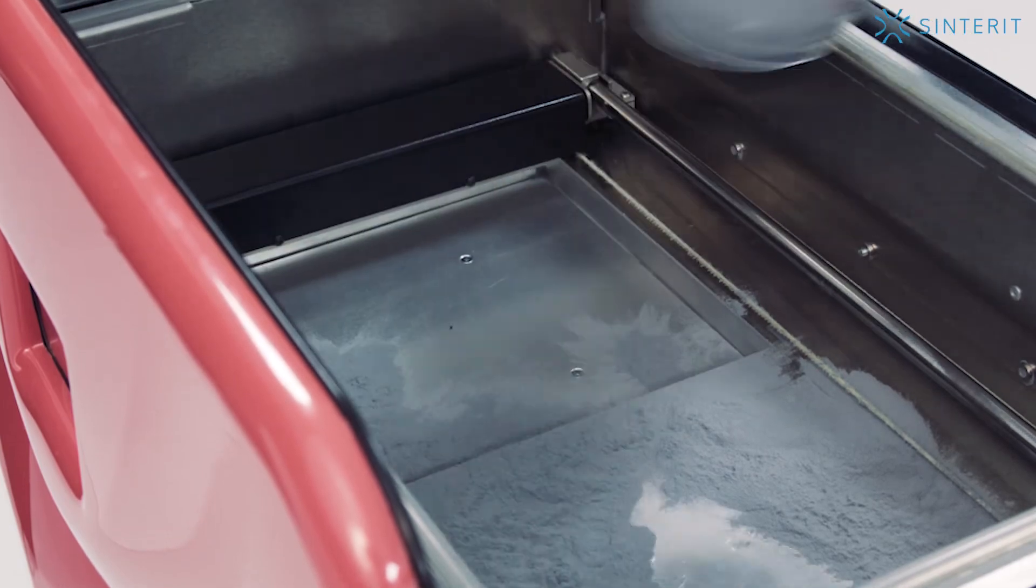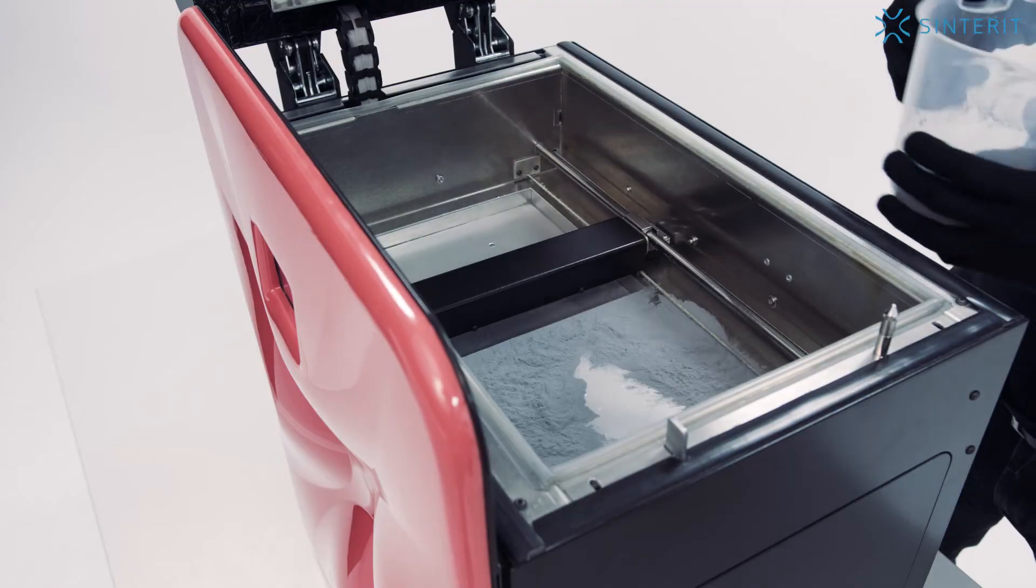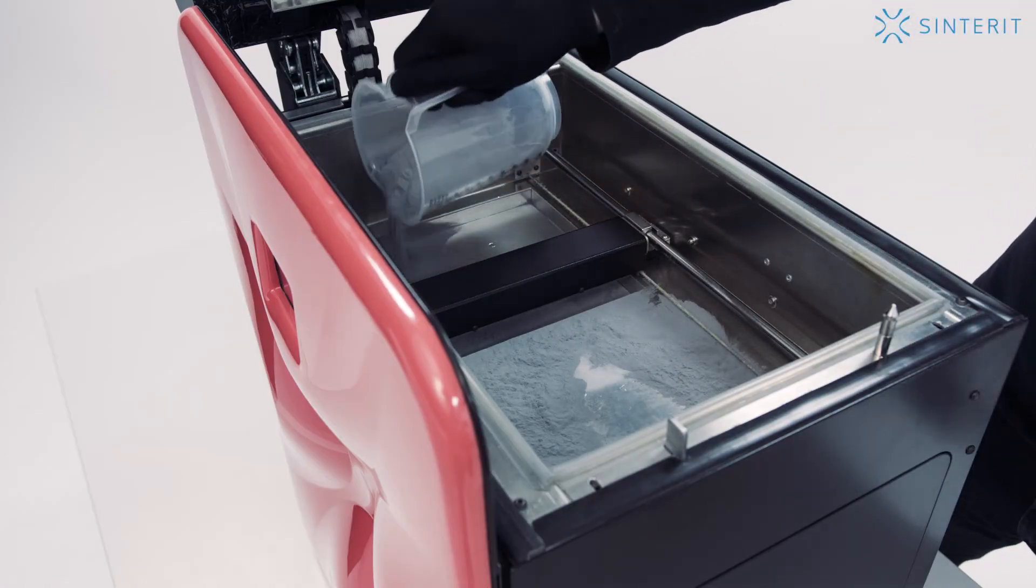If the recoater is in the way, reposition it manually to a favorable position with the power switched off. Next, distribute the powder over the edges of the beds.